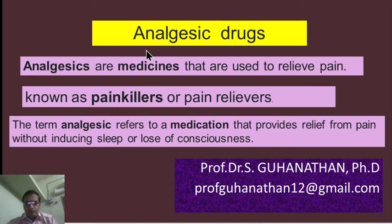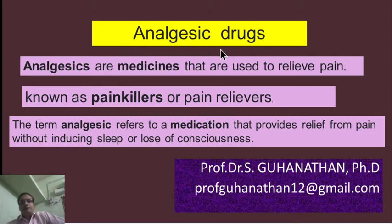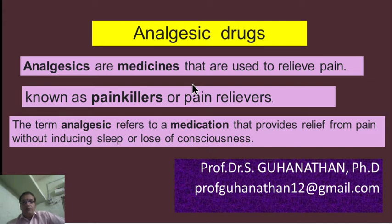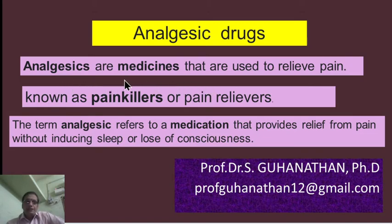Welcome back. We will have a discussion about analgesics in this video. In our previous videos about medicinal chemistry — this is the second video — we covered the general introduction about medicinal chemistry, how medical research is taking place and being applied to human beings for making a large number of medicines, and the classifications of medicines, including general classifications like antipyretics and analgesics.